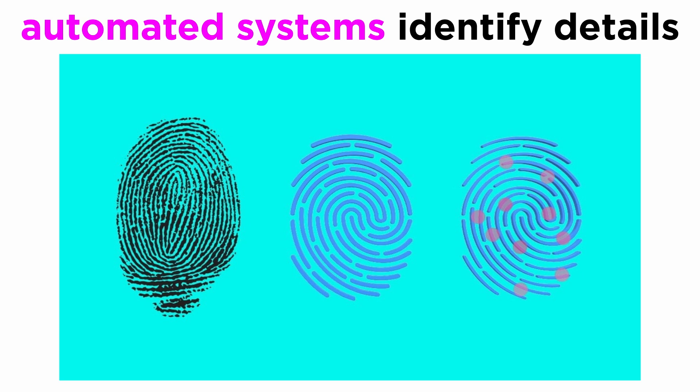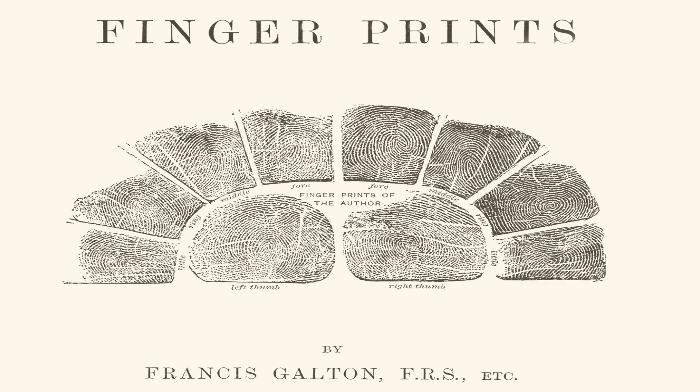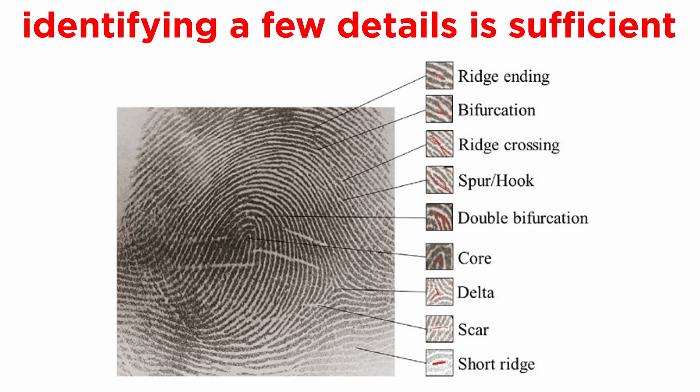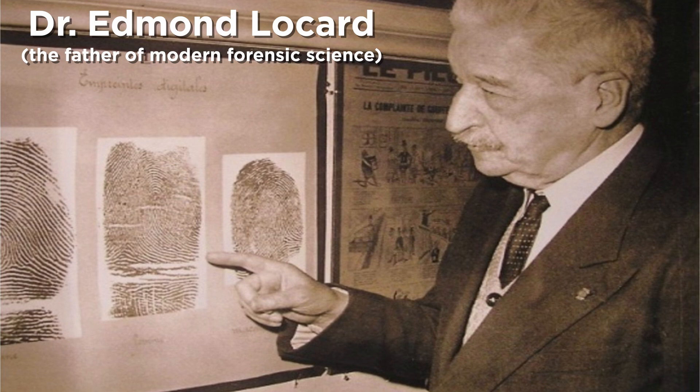Nowadays, it is exceptionally easy to upload an impression into an automated system that recognizes all of the details present in it. However, this was not the case in the budding years of fingerprint science when everything was to be done manually. This is the reason why there was a need to put a limit on the number of details needed for identification. Here enters one of the most popular figures in forensic science, the Sherlock Holmes of France, also known as the father of modern forensic science, Dr. Edmund Locard, who we discussed earlier in the series when we learned about the law of exchange.